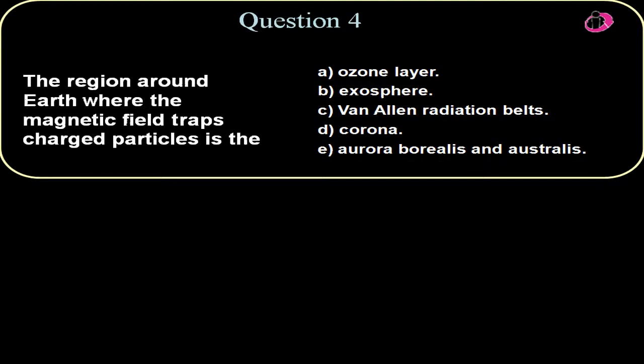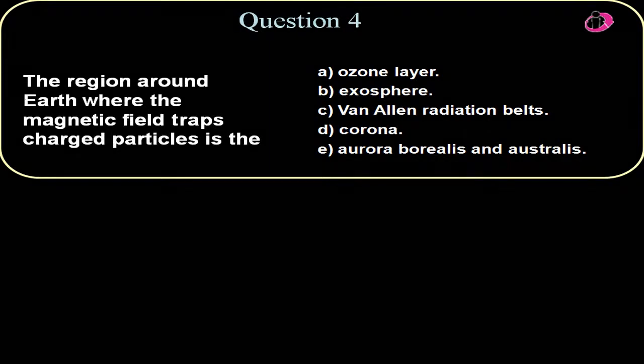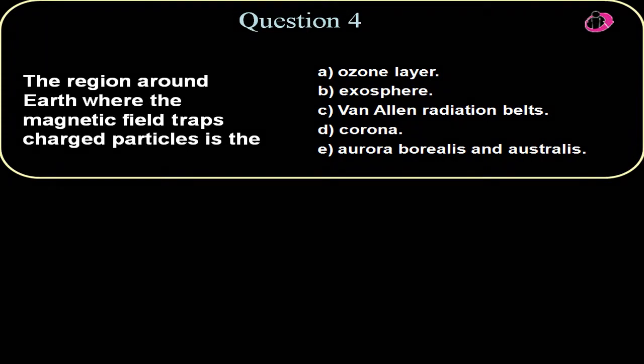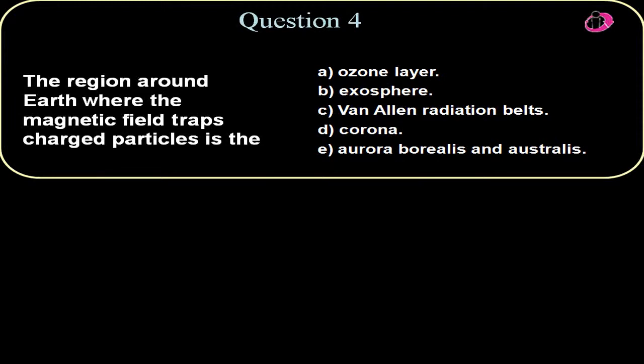Question four, the region around Earth where the magnetic field traps charged particles is the? Well, one consequence of the Earth's magnetic field is the aurora borealis, the northern lights, and also the Van Allen radiation belts where charged particles get trapped in these areas. It's not necessarily a good thing. It's just a consequence of the good thing, which would be the Earth's magnetic field to begin with.